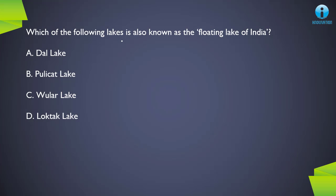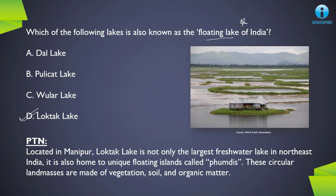Next question: which of the following lakes is also known as the floating lake of India? The correct answer is D, Loktak Lake. This lake is located in Manipur and is the largest freshwater lake in Northeast India. It is unique because of the floating islands called Phumdis — circular land masses made of vegetation, soil, and organic matter that float on the surface. That is why it is called the floating lake of India.